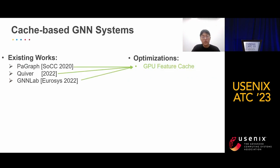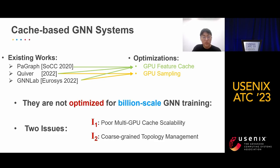To solve issues of traditional GNN systems, several cache-based systems have been proposed. Specifically, ParGraph, Quiver, and GNNLab use GPU feature cache to minimize the CPU to GPU data transferring volume. Quiver and GNNLab further use GPU sampling to overcome the CPU sampling bottleneck. Though these cache-based systems have achieved good speed-up in many middle-sized datasets, we find they suffer from billion-scale GNN training. In other words, they are not optimized for billion-scale GNN training.